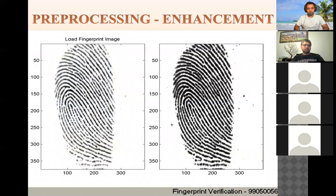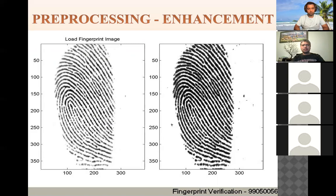Image enhancement is the process of adjusting a digital image so that results are more suitable for display or further image analysis. A fingerprint image is first enhanced before the features contained in it are detected or extracted. A well-enhanced image provides a clear separation between valid and spurious features — spurious features being minutiae points created due to noise or artifacts not actually part of the fingerprint, such as those caused by pressure differences on the scanner.